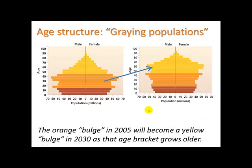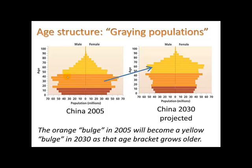This is China in 2005. You can see that their one-child policy has been effective at reducing the number of children being born — their bulge is in the middle age. Projected to 2013, we would expect this bulge to move upward. This is one way we can use age structure diagrams to predict changes that will come to a population in the future.